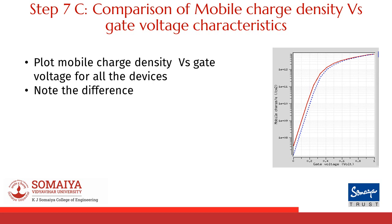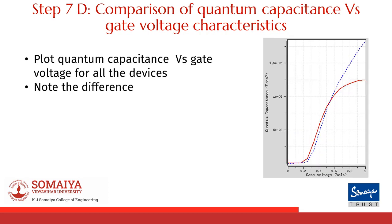Research says that CNT-FET and nanowire FETs are faster devices as compared to bulk CMOS. Let's plot mobile charge density versus gate voltage for all the devices and observe the difference. Since quantum capacitance influences propagation delay, the change in quantum capacitance with gate voltage will help us comment on the speed of the device.